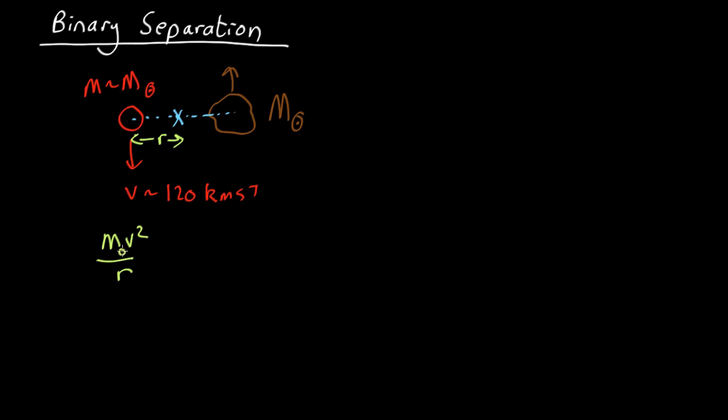So for each object we've got the mass, which we'll assume is the mass of the sun, times v squared over r must equal the centripetal force. Now what is causing the centripetal force? Well it must be gravity between the two. So that's given by Newton's normal law of gravitation: G mass of the first object mass of the second object over the distance between them which is 2r squared.